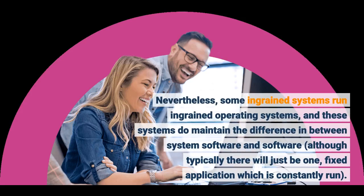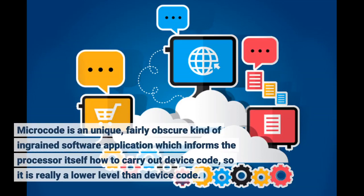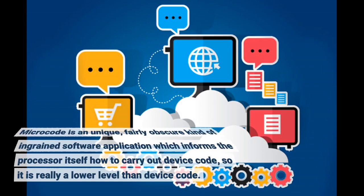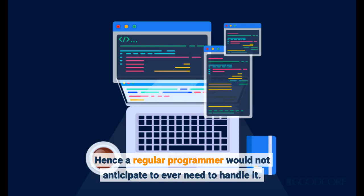Some embedded systems run embedded operating systems, and these systems do maintain the difference between system software and application software, although typically there will just be one fixed application which is constantly run. Microcode is a unique, fairly obscure kind of embedded software that tells the processor itself how to carry out machine code, so it is really a lower level than machine code. Hence, a regular programmer would not expect to ever need to deal with it.